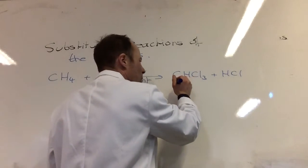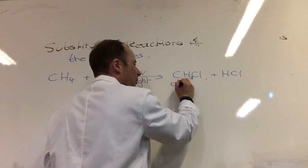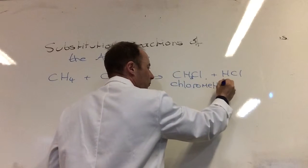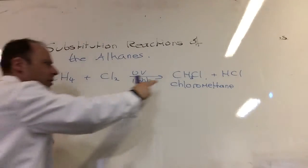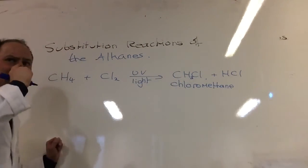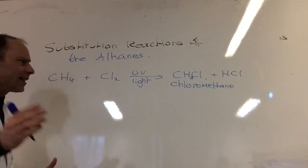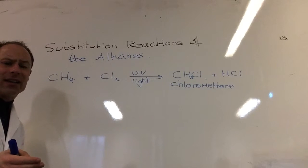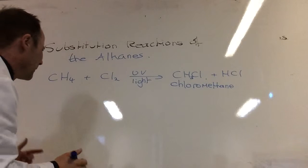This guy would be chloromethane. So I've replaced one of the hydrogens with a chlorine atom. Now that's fine, so that's an equation you need to know, but how does that reaction actually occur? So we're going to talk it through step by step. This goes through three steps and it's called free radical substitution.